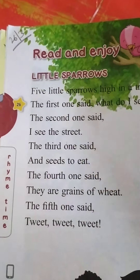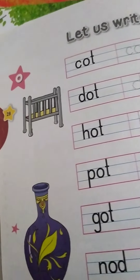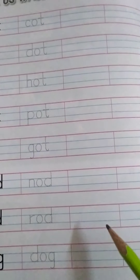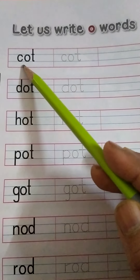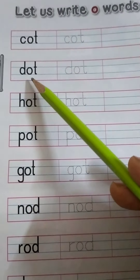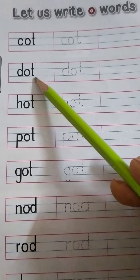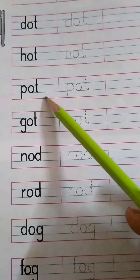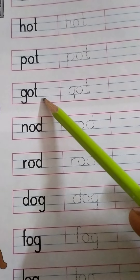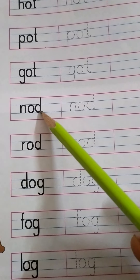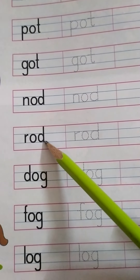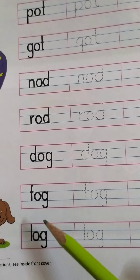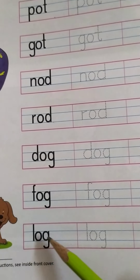Now I want to give you some words from your textbook. Let us write O words, children. Everyone practice in your textbook. C-O-T, cot. D-O-T, dot. H-O-T, hot. P-O-T, pot. G-O-T, got. N-O-D, nod. R-O-D, rod. D-O-G, dog. F-O-G, fog. L-O-G, log.